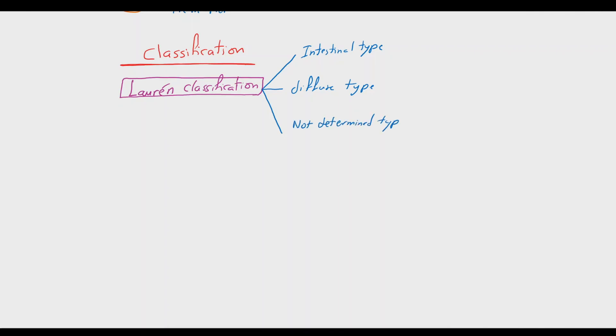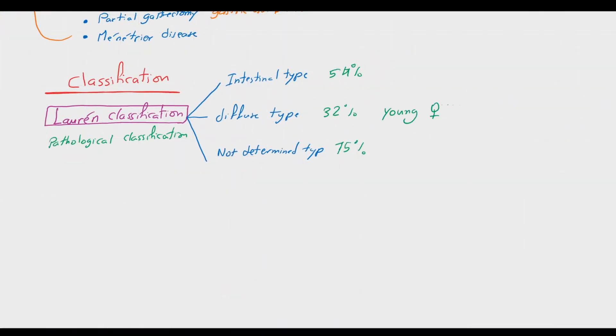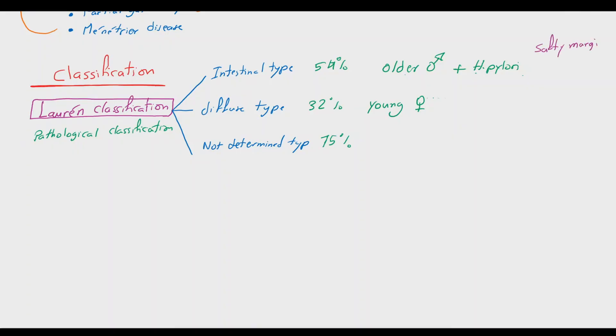Intestinal type is about half of patients, more common in older males and associated with Helicobacter pylori. Diffuse type is about a third of patients, more common in young females. The intestinal type is relatively less aggressive with a safety margin of 5 cm.